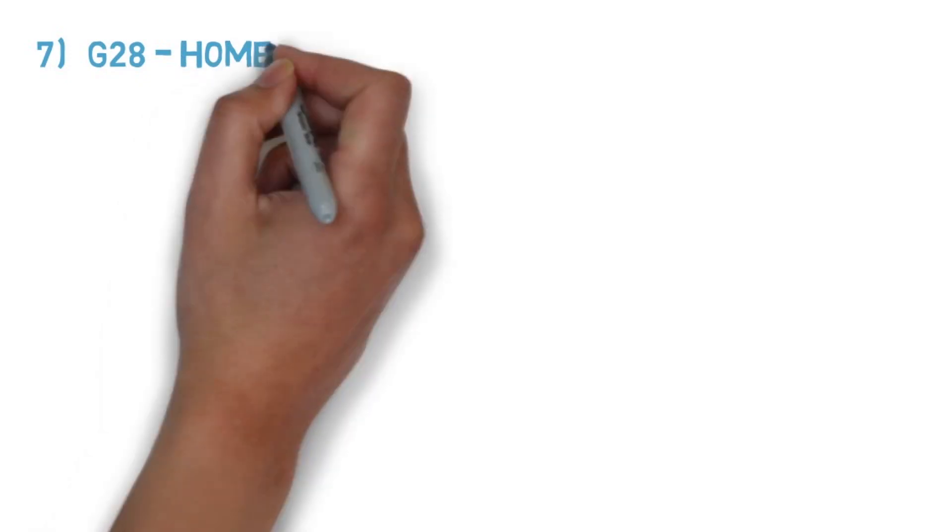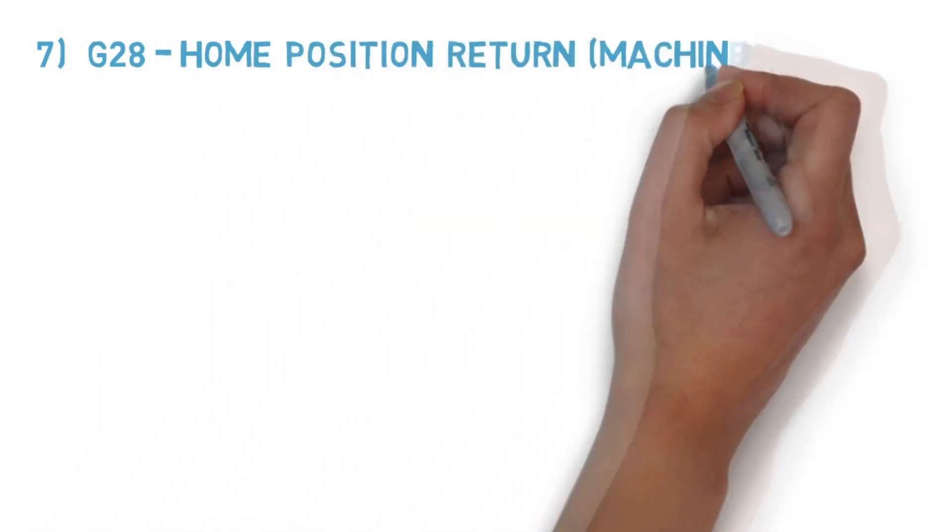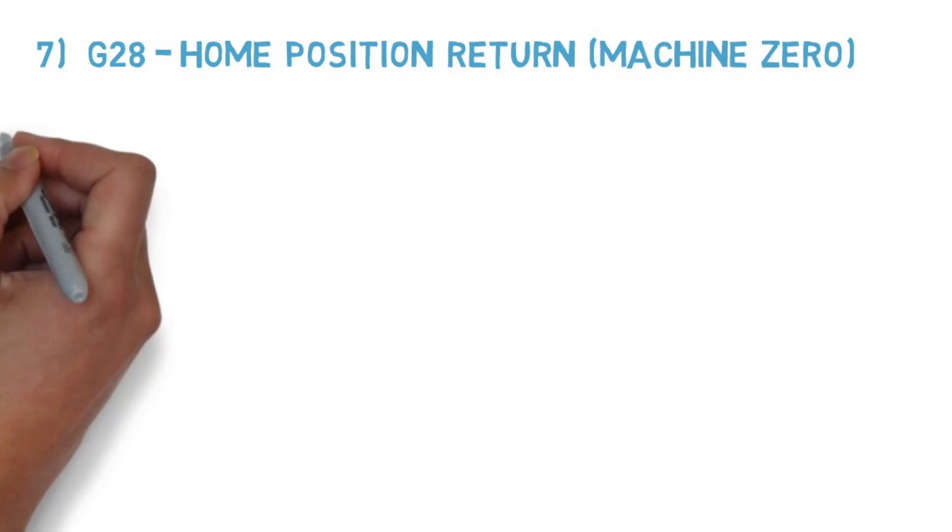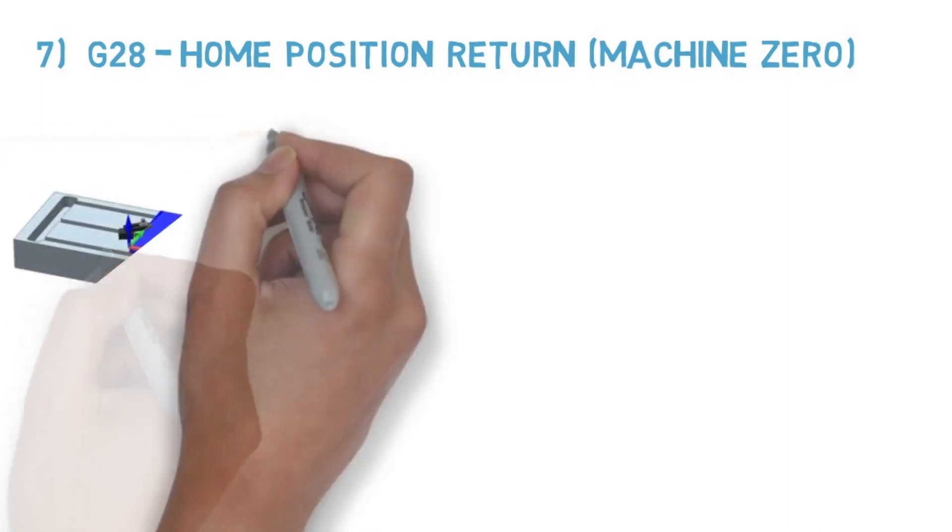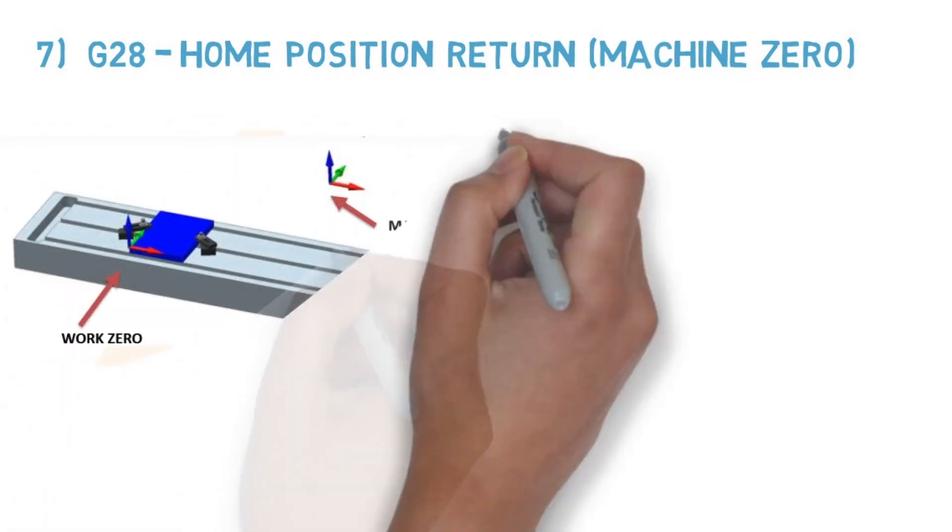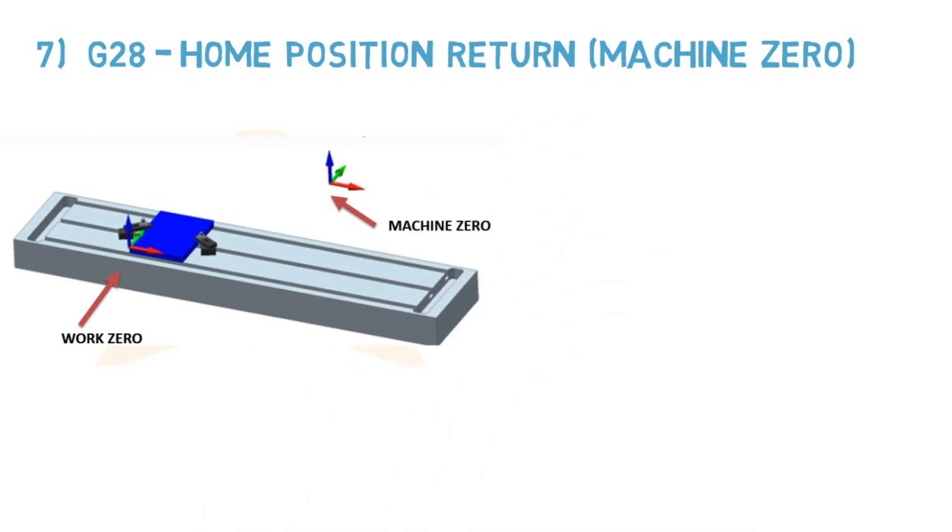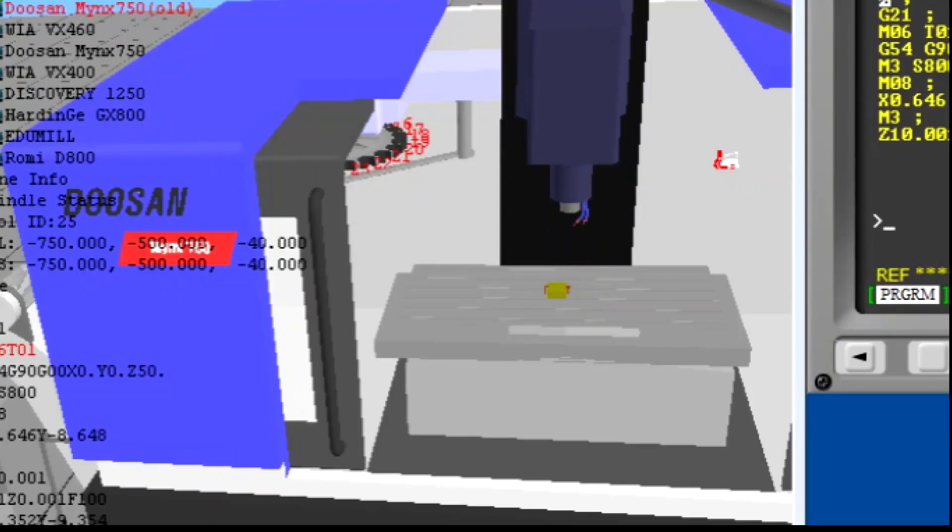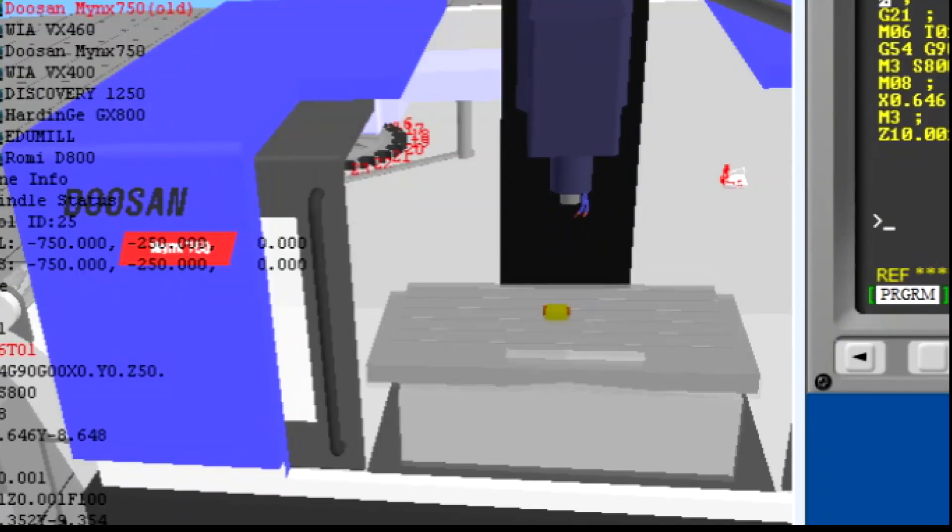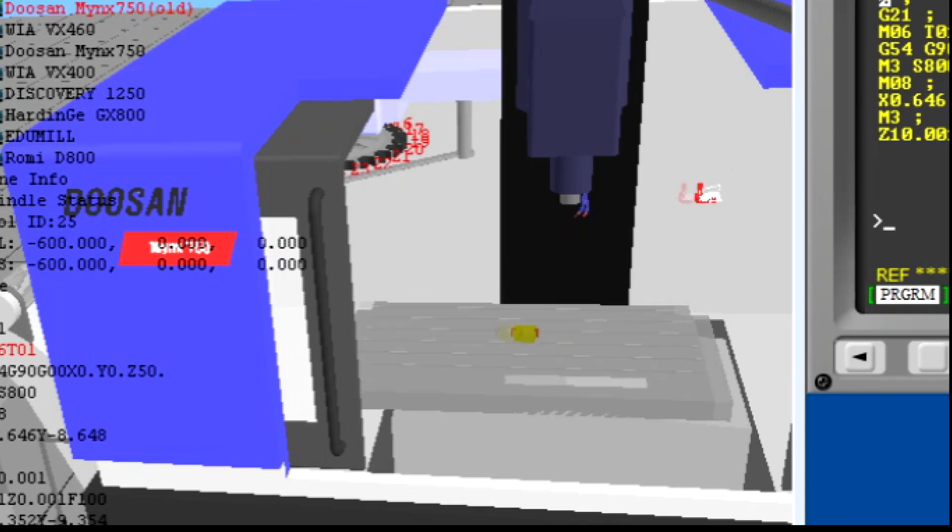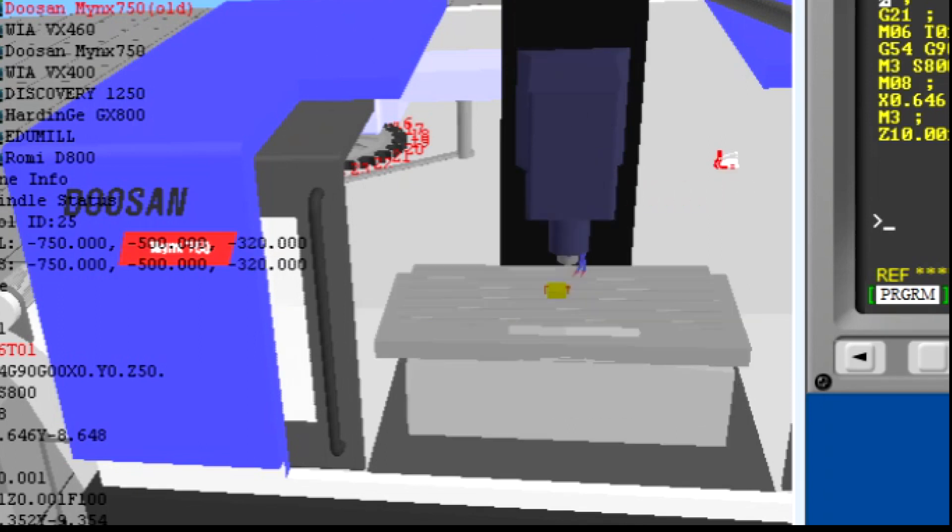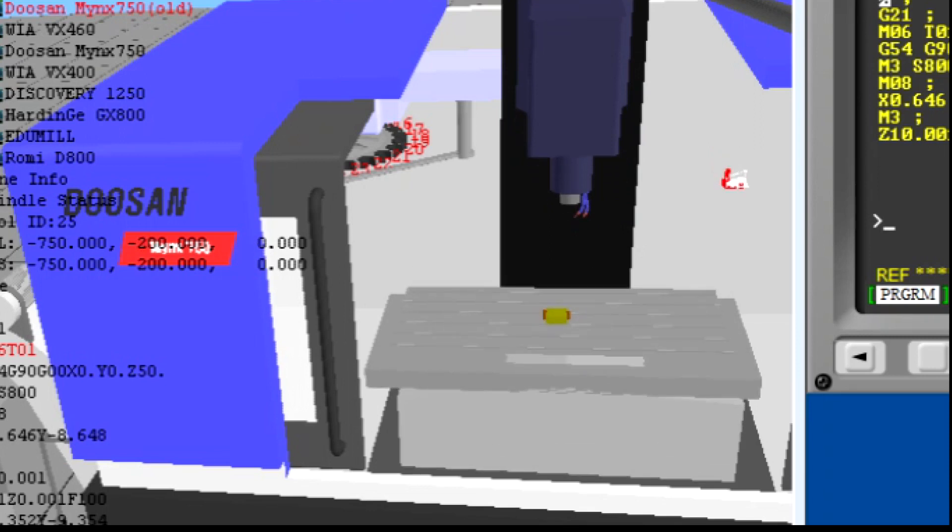Number seven, G28 - Home position or machine zero. According to our requirement, we may set X0, Y0, Z0 on our different workpieces. But the machine has a fixed datum at one of its topmost positions - that is called the home position. When the axes are moved to home position, we can load and unload the workpiece and tools comfortably. The distance between workpiece and tool will be very far.